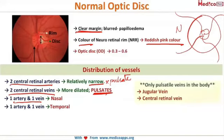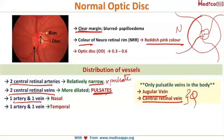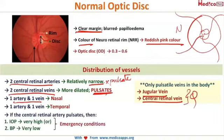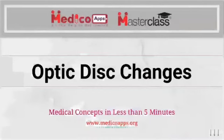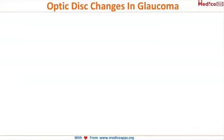Please remember that there are only two veins that pulsate in the body: the jugular vein and the central retinal vein. However, if the central retinal artery starts to pulsate, it is an emergency condition — it indicates that the IOP is very high or systemic blood pressure is very low, requiring emergency treatment.